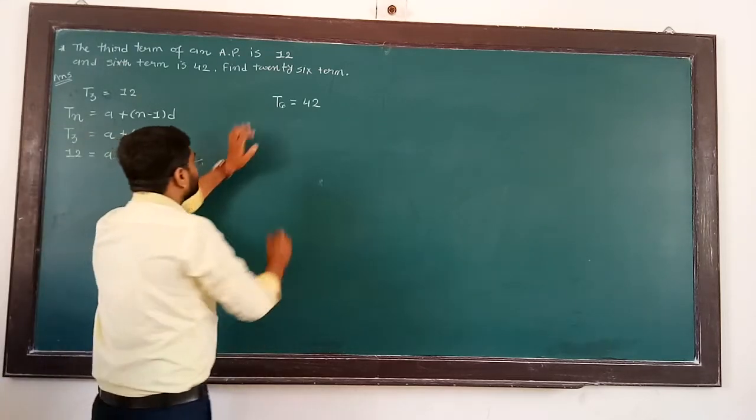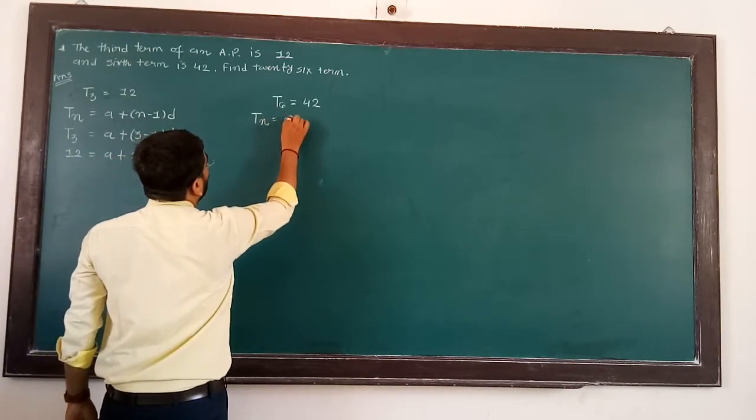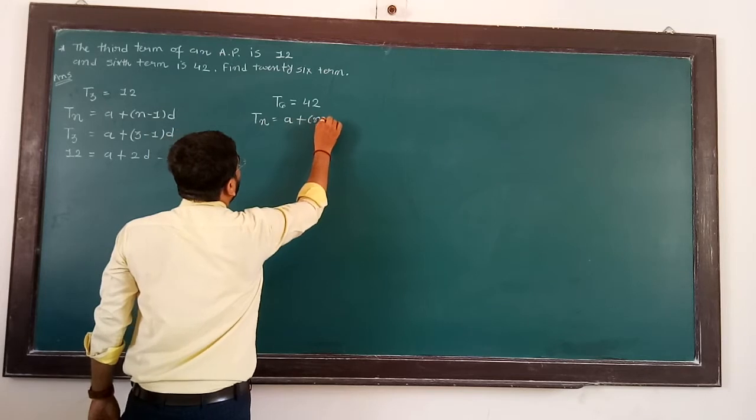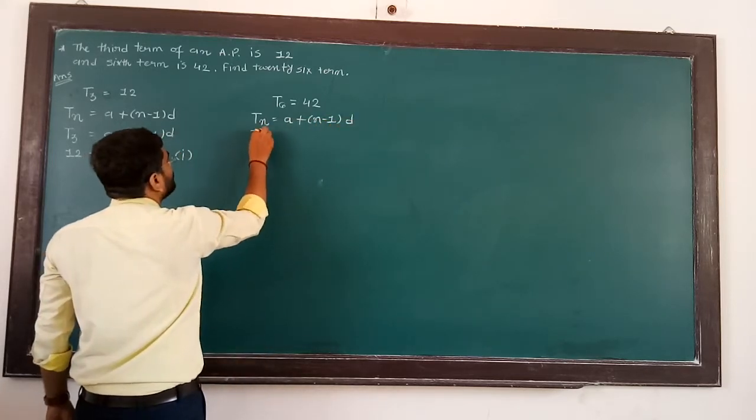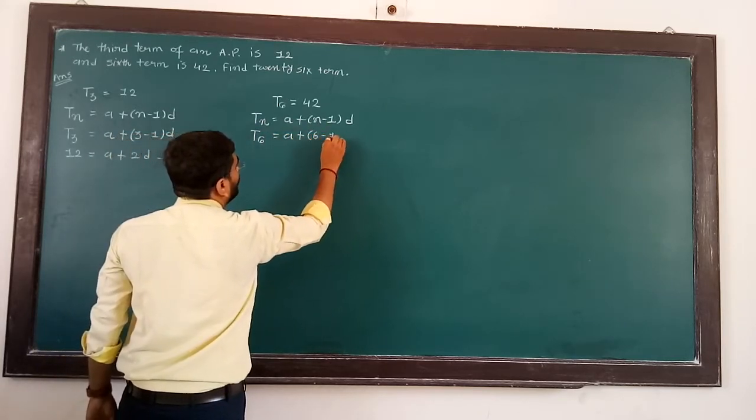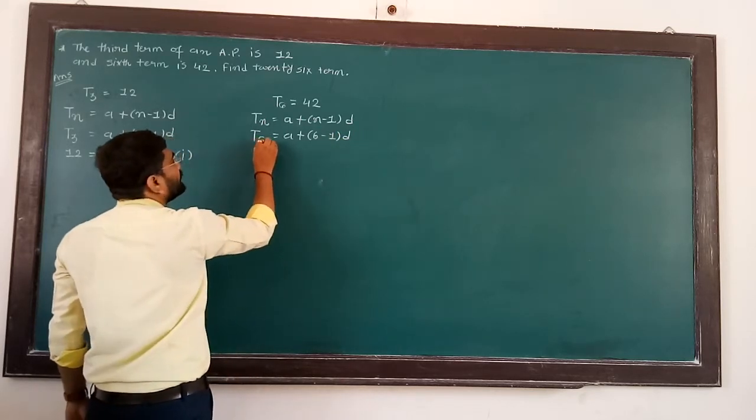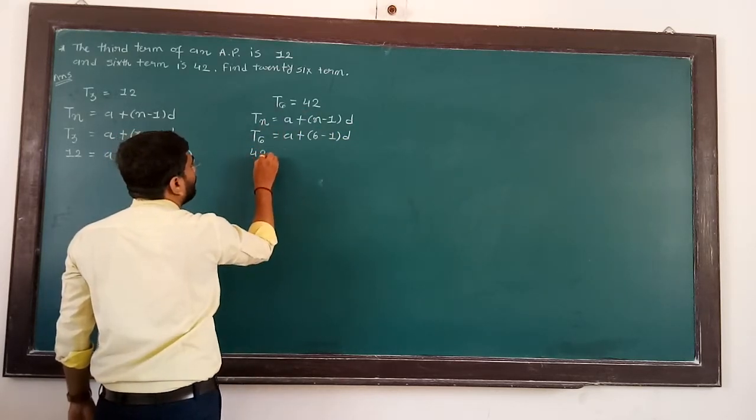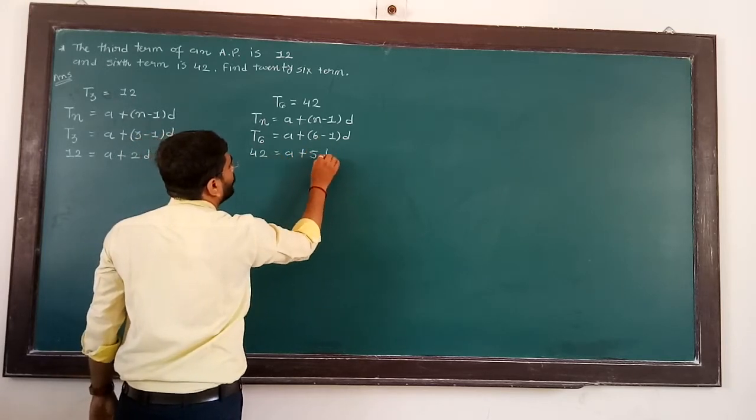Same as you find here, Tn is equal to A plus N minus 1, D. T6 means T6. A is not given. N is equal to 6 minus 1, D. T6 is equal to A plus 6 minus 1, 5, D.